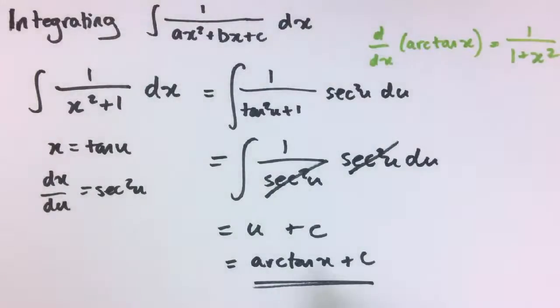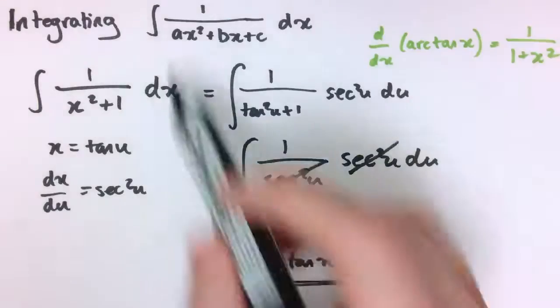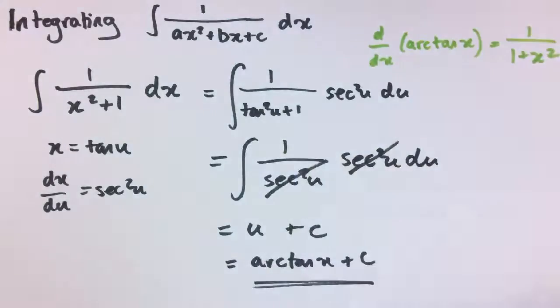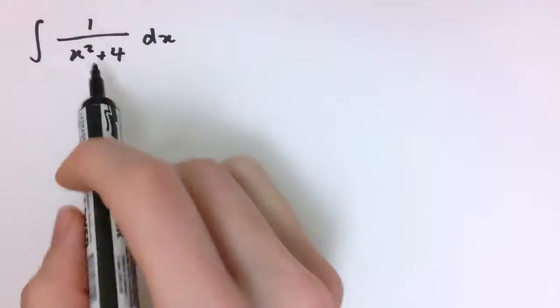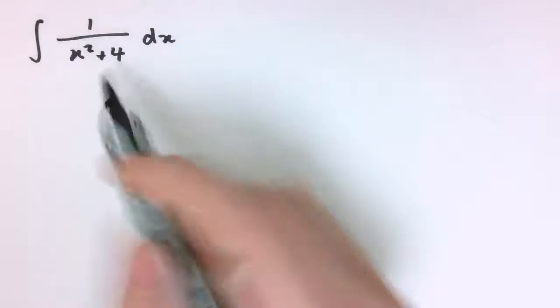And now we're going to use that result to be able to integrate any function of this form just by slight extensions. So let's start with 1 over x squared plus a number that's not 1, so let's go for 4 here.